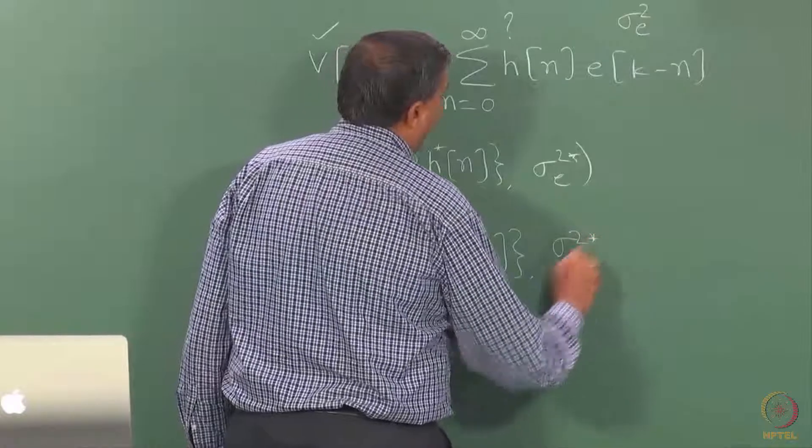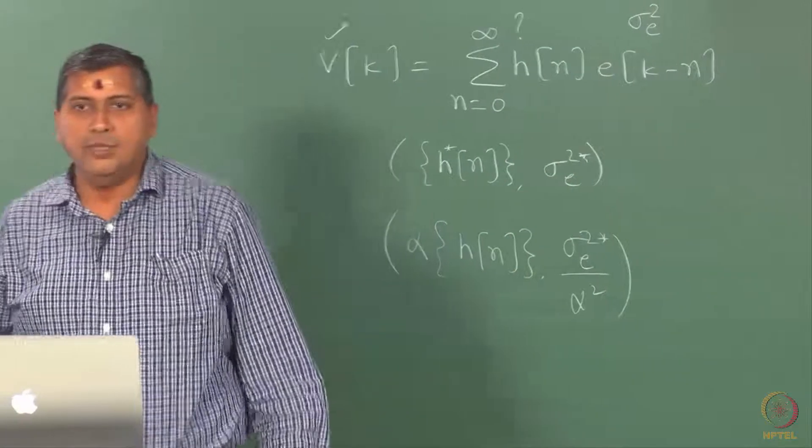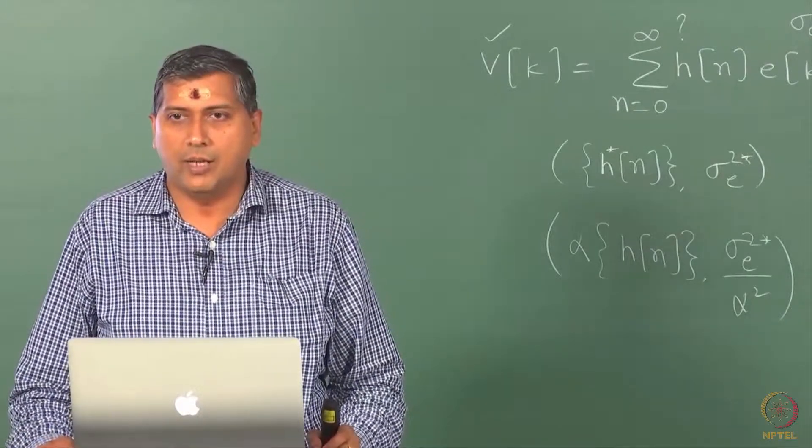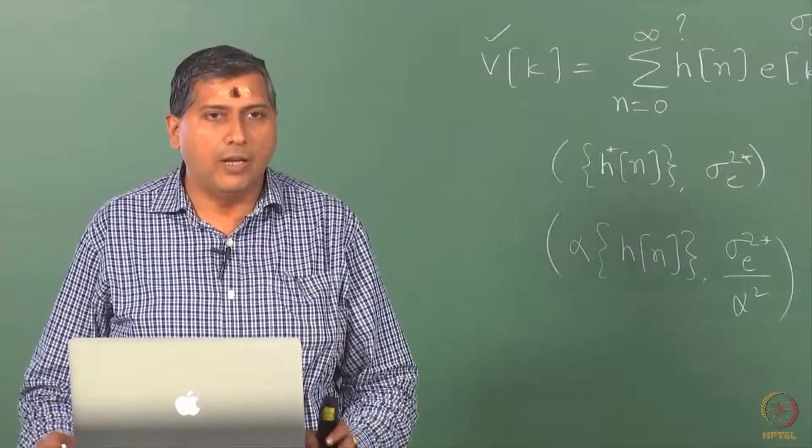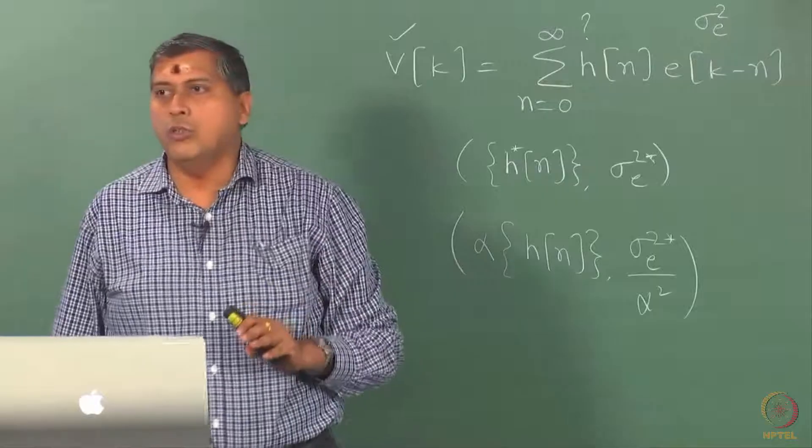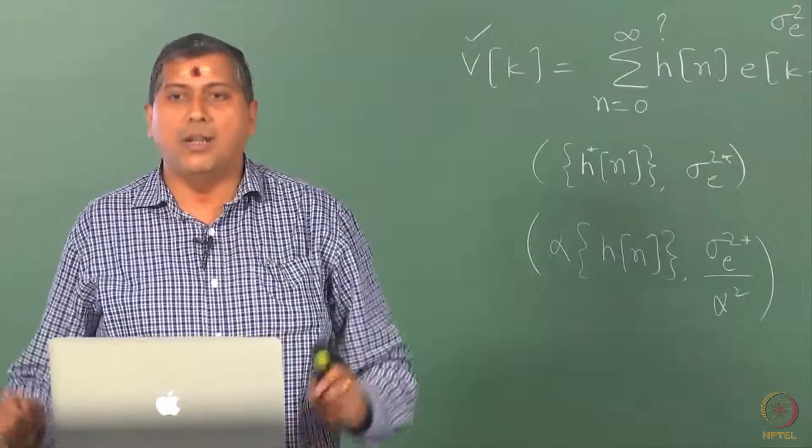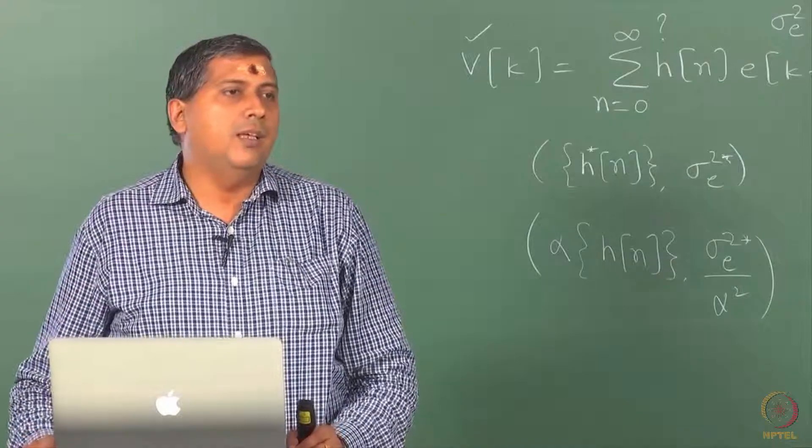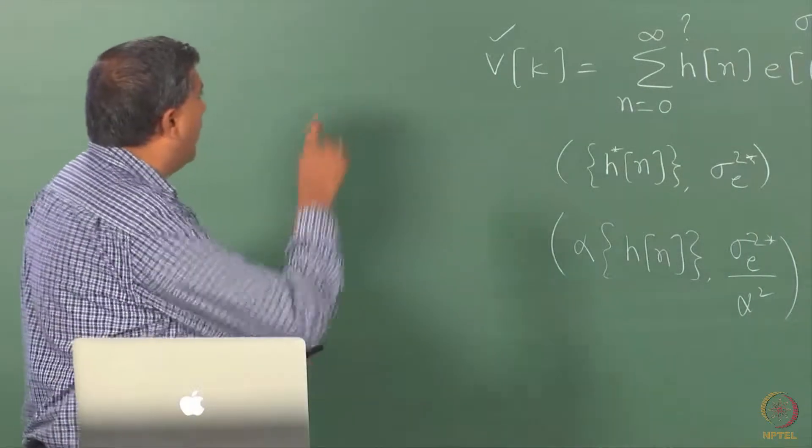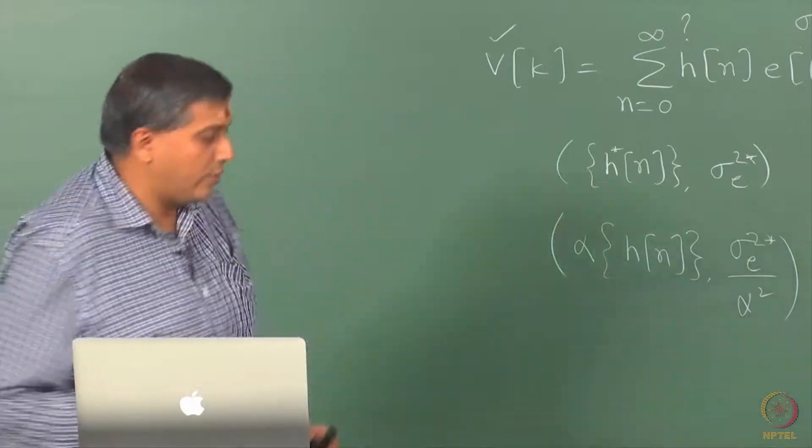So sigma squared e star by alpha squared, because if you scale the coefficients by alpha, it amounts to scaling this by 1 by alpha and therefore sigma squared e also proportionally gets scaled by 1 over alpha squared. This is true for any non-zero value of alpha. I do not know therefore which is a solution and we do not want to be in such a situation where I have one time series model and there are infinite other possible candidate models. We want to have a unique solution and therefore we have to do something.